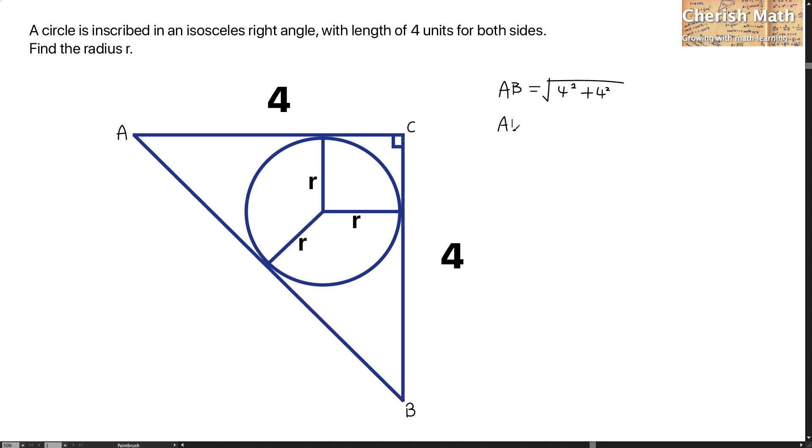So the length of AB is 16 multiplied by 2. In exact form, this is 4√2.